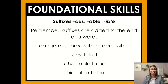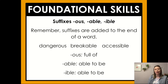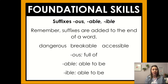Your foundational skills practice today is on the suffixes OUS, ABLE, and IBLE. Remember that those suffixes are added to the end of a word. Some example words are dangerous, breakable, and accessible. OUS means full of, ABLE and IBLE both mean able to be. So dangerous would be full of danger, breakable would be able to be broken, and accessible would be able to be accessed.